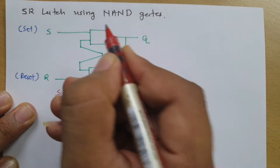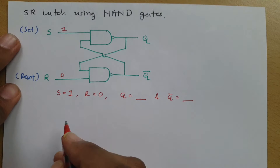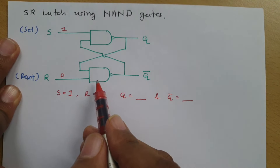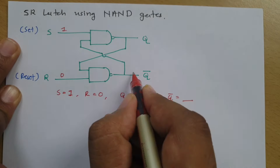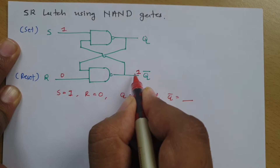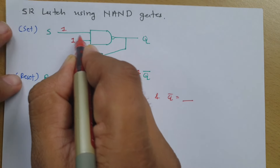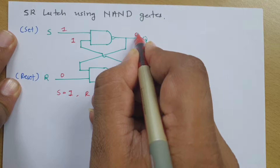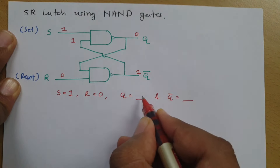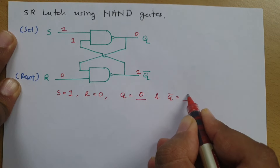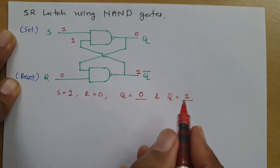Let us say S equals 1 and R equals 0. As I have said, for a NAND gate if any input is 0 then output is 1. So here we have a NAND gate with input 0, so output is 1, and this 1 goes in feedback. So this 1-1 results in output 0. We can say output Q is 0 and output Q-bar is 1, and both are complemented to each other, so this is a valid state.